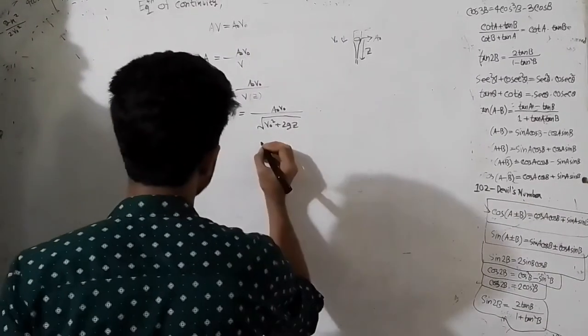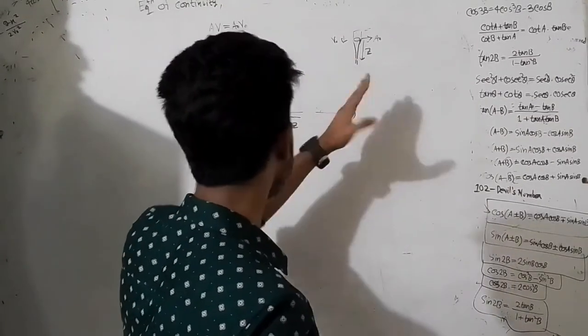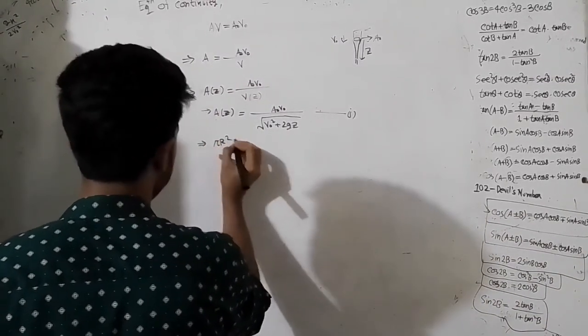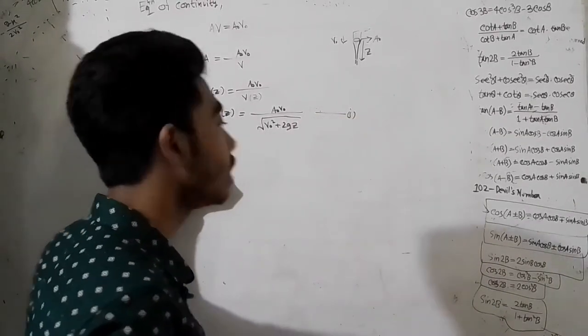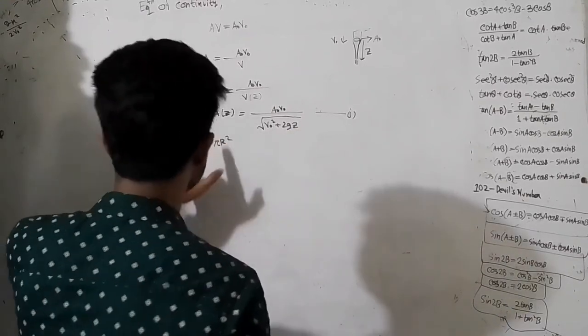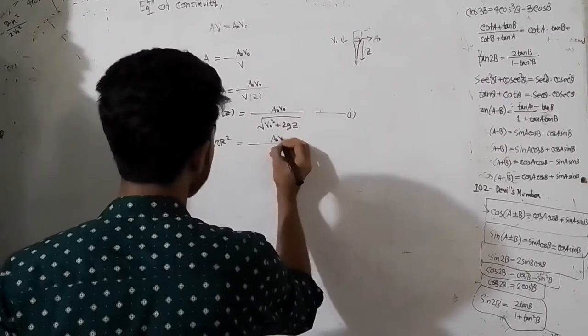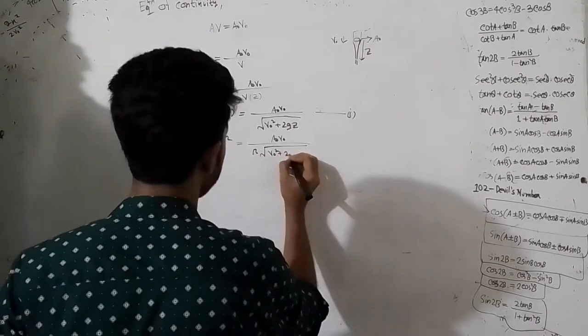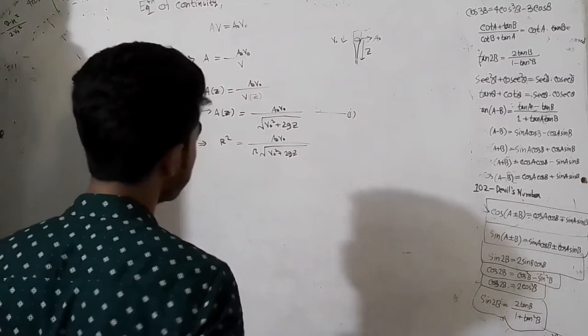V square is equal to V square plus 2g, and it act equation. Az, a pointer is cross-sectional area, this is circular area. So Az we write pi r square.